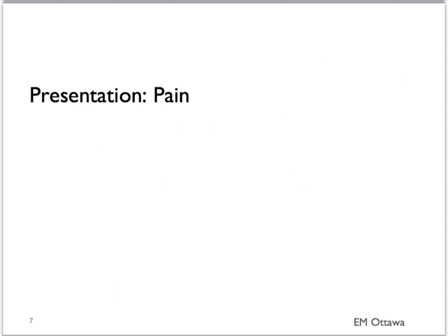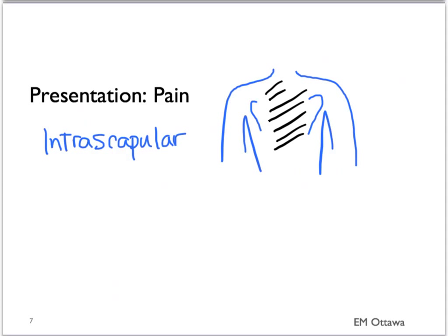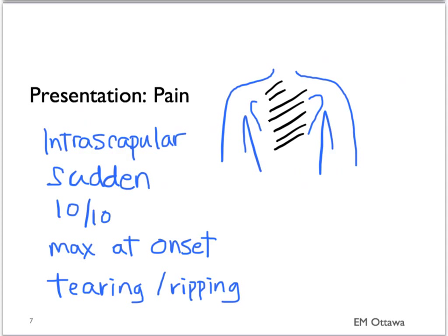The classic pain for aortic dissection is back pain. This pain is intrascapular, severe, sudden in onset, and maximum at onset. Patients sometimes can describe it as a tearing pain. The pain may sometimes radiate to the anterior chest.